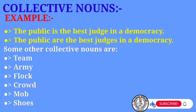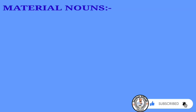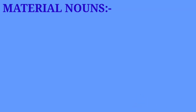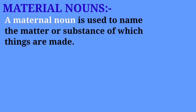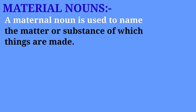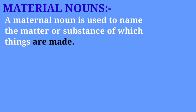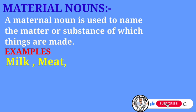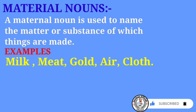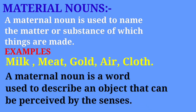We are going to talk about collective nouns. Material nouns are also called 'agab' in Somali. Material nouns — it's called Material Nouns. The material noun is a word used to describe an object or a shape.